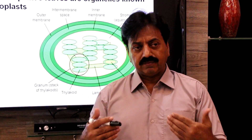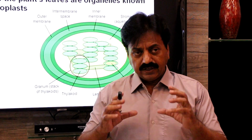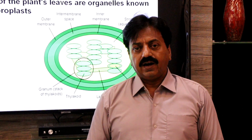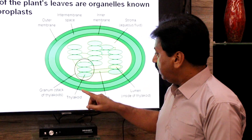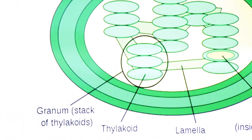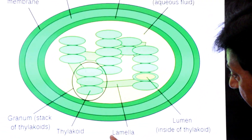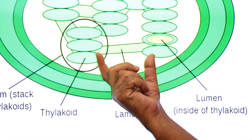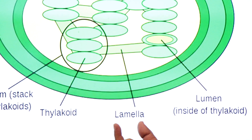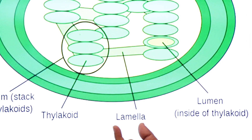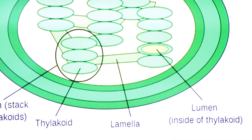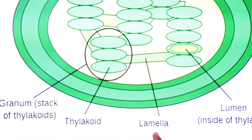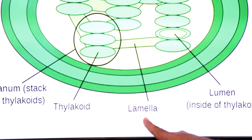We will study photosystem 1 and photosystem 2, which are located in the thylakoids and grana. Grana and thylakoids are the sites of the light reaction of photosynthesis. Two grana are connected to each other by plate-like structures called lamellae, also called intergranal lamellae.